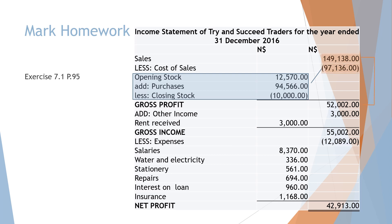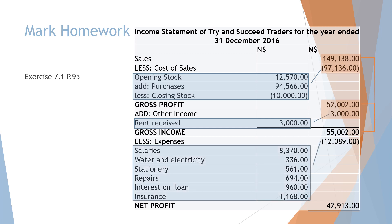Then you add your other income. In this case there was just one rent received. Gross profit plus your other income gives you your gross income — the next main calculation. Then we get the total of our expenses. When the total of the expenses are less than the gross income, like in this case, the business will make a net profit.